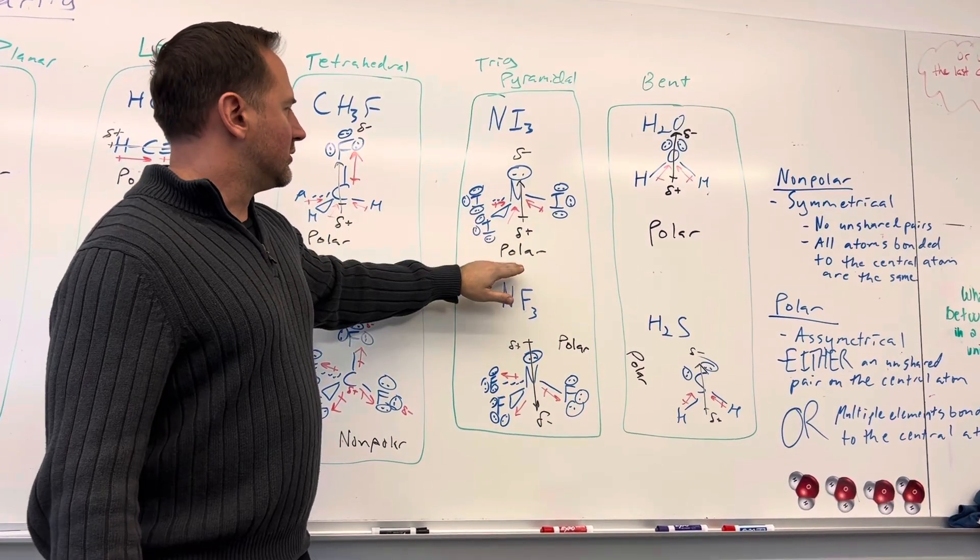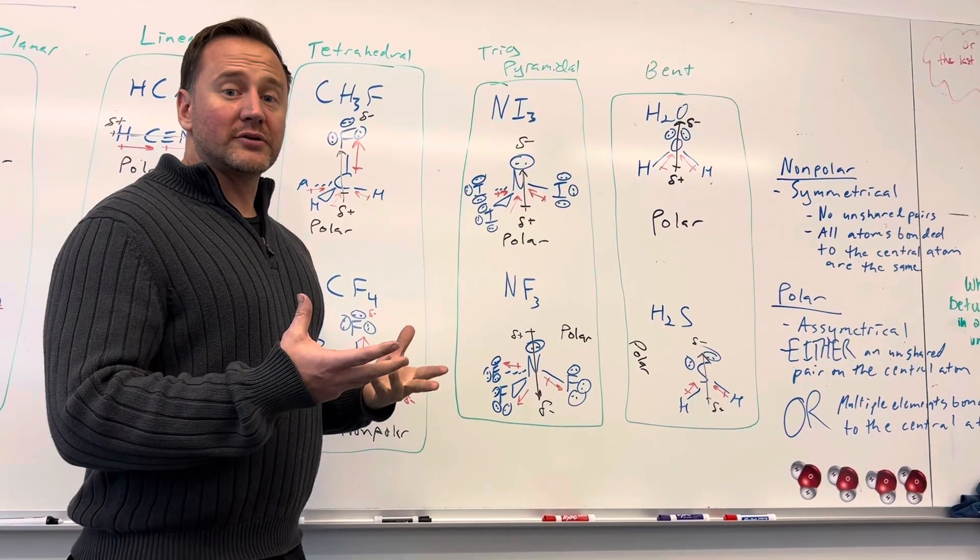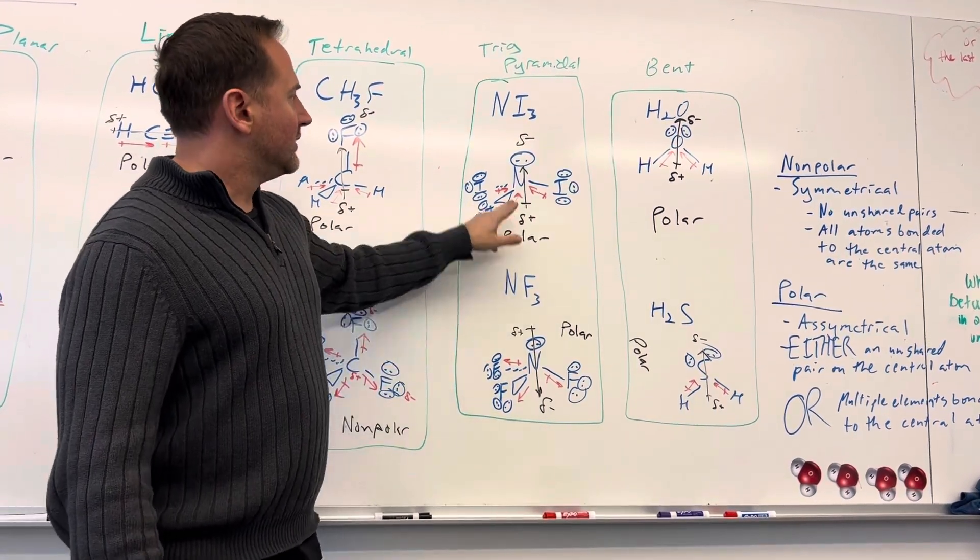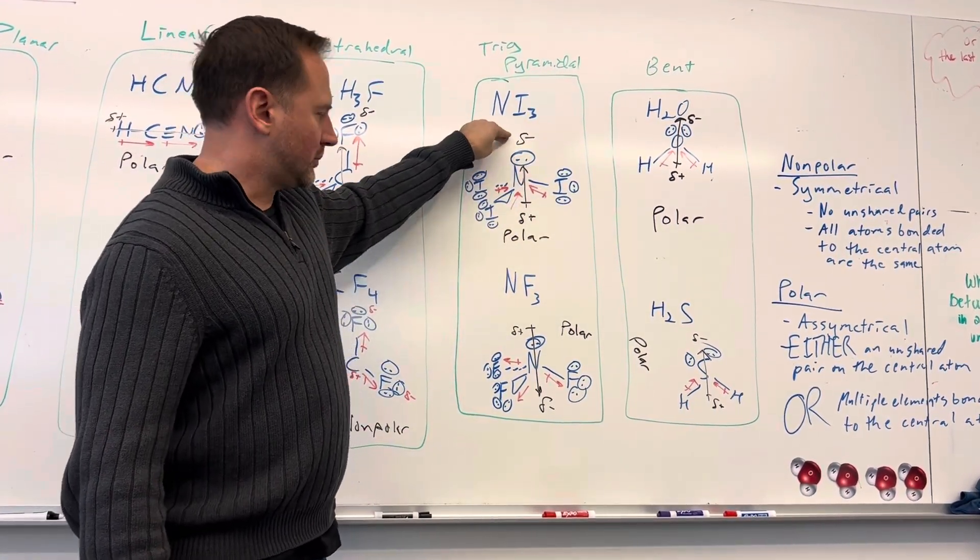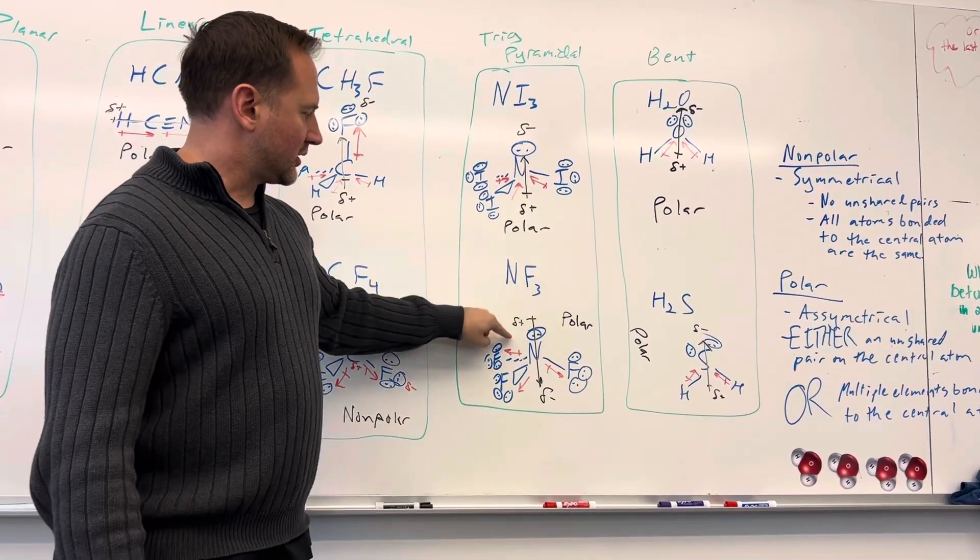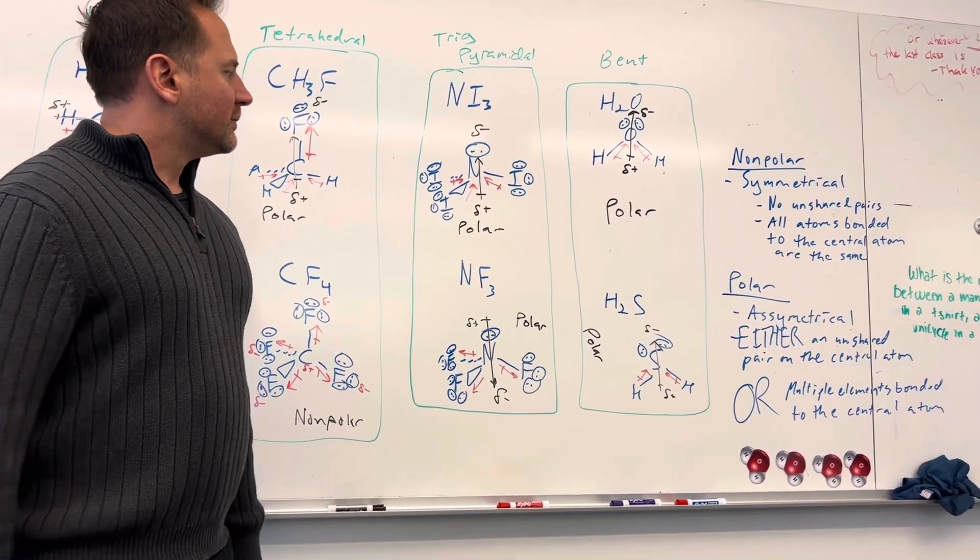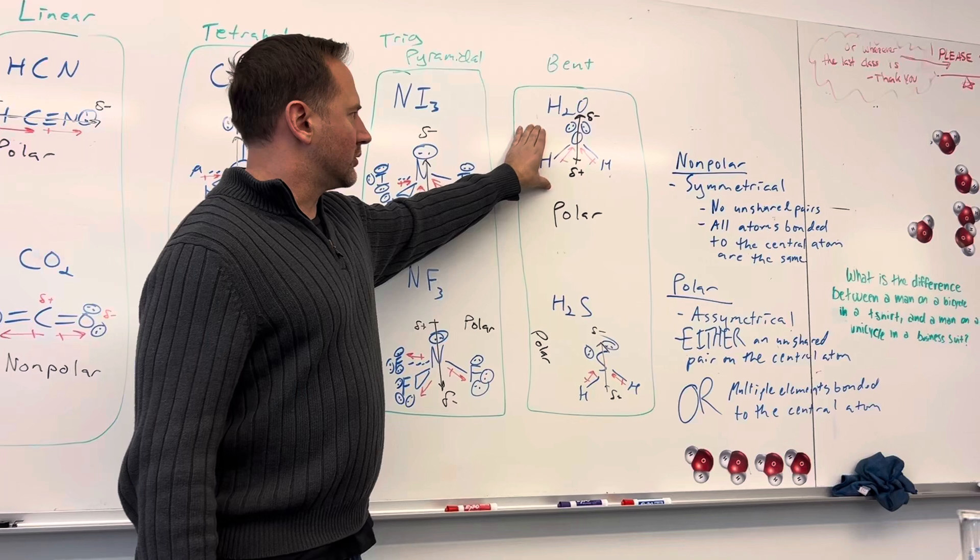So if you have the central atom being more electronegative than the surrounding elements, then it's going to draw the electrons up to it and it's going to be partially negative. Or if it goes out, it's going to be partially positive on the central atom and partially negative at the more electronegative element. And the same deal with bent molecules.